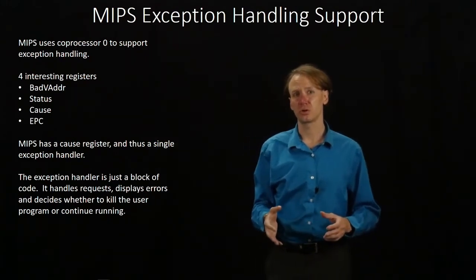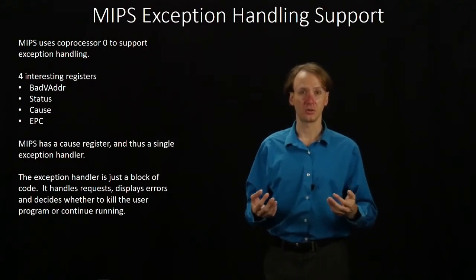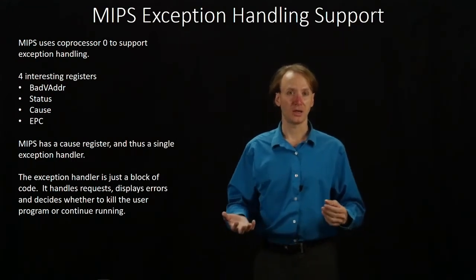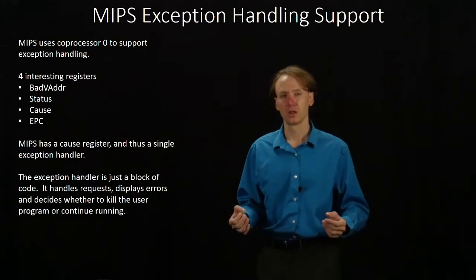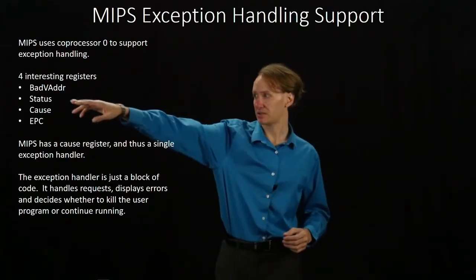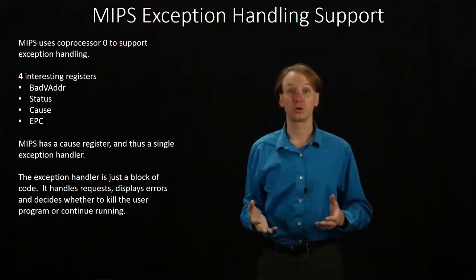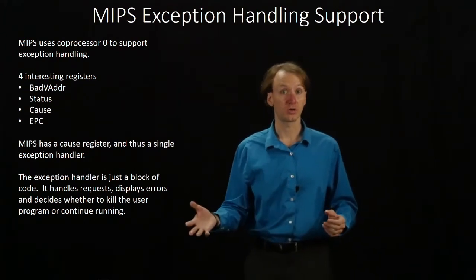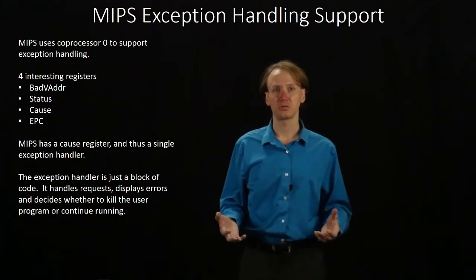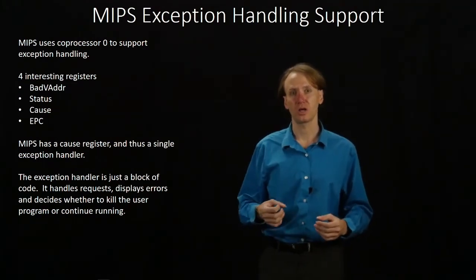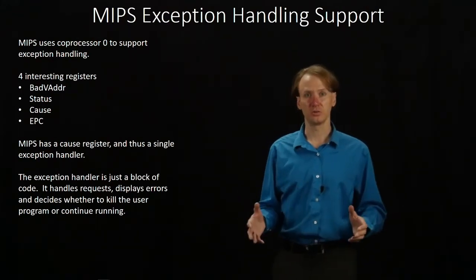We have a status register, but unlike what we just looked at, we're not putting the error in there — the error goes in the cause register. The status register holds a history of what things have gone wrong, covering the last three errors, including whether they happened in kernel mode or user mode and whether it was an interrupt or an exception. It also tells the processor which exceptions to look for — maybe we'd like to ignore all interrupts for the moment. The cause register is where we actually put whatever error has occurred, whether it's an actual error or a kernel request. EPC stands for exception program counter, which tells you where in your code the exception occurred, giving us a way to return to that line of code if needed.